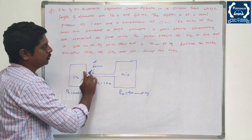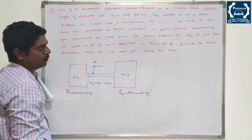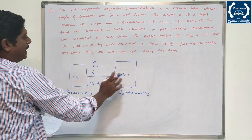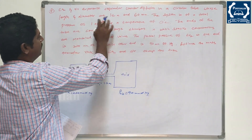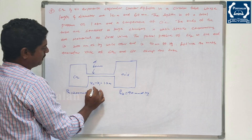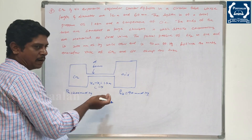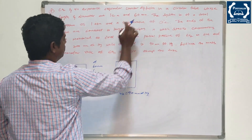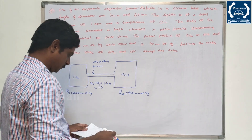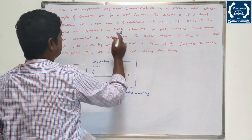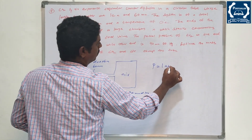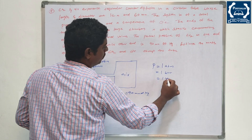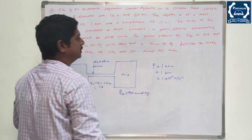When it comes to the pressure difference, we note that the total pressure is 1 atm, equal to 1.01325 bar, which we round to approximately 101,325 N/m². The diameter is 0.06 m and the length x2 minus x1 is 1.2 m.